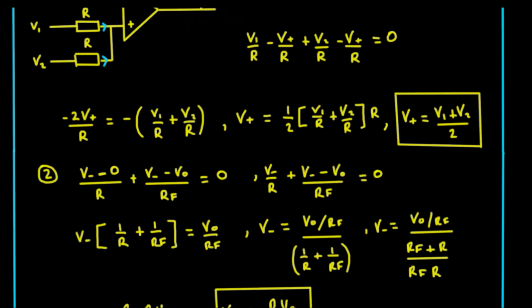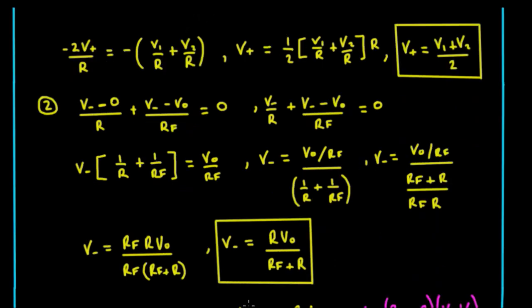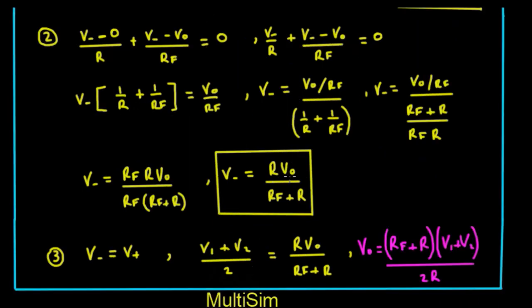So this is finally our v_minus. We're just taking our rf upon r up there and it becomes this here, so v_minus equals (rf * v_out)/(rf + r).